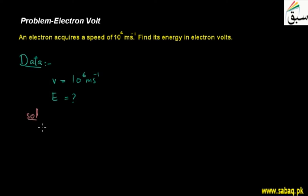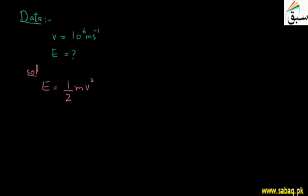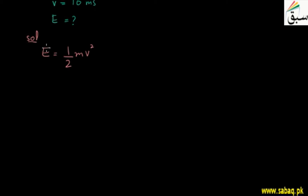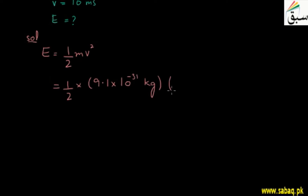Now we can find kinetic energy. The formula is half mv squared. The mass of the electron is 9.1 into 10 raised to the power minus 31 kilogram, multiplied by the velocity, which is 10 raised to the power 6 meter per second, squared. This is then multiplied by one half.